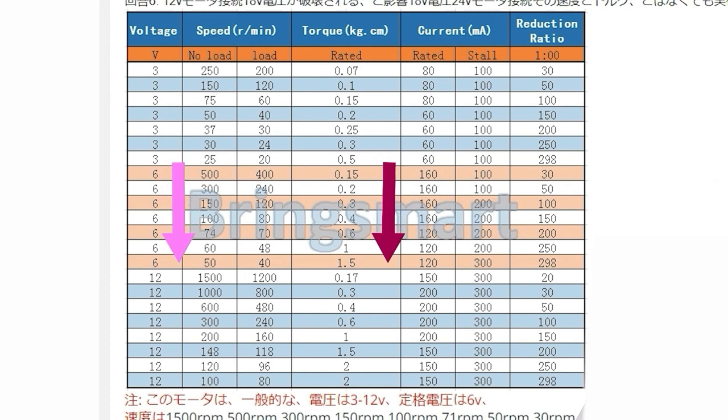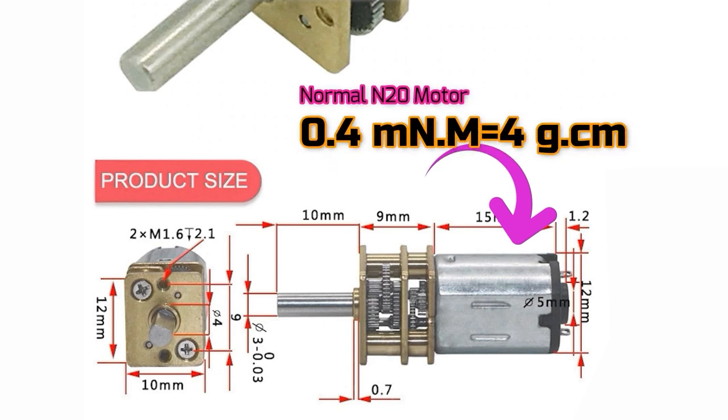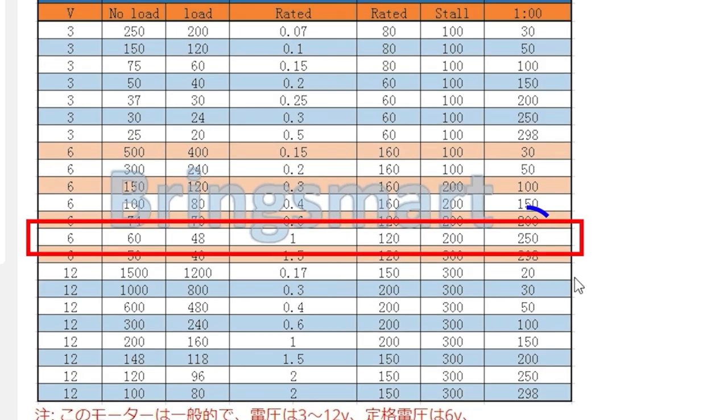The normal N20 motor has about 0.4 mNm or 4 g·cm torque. By decreasing the speed 250 times, the torque can increase 250 times.